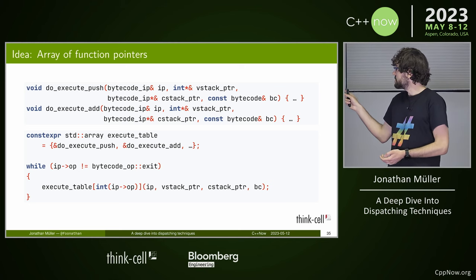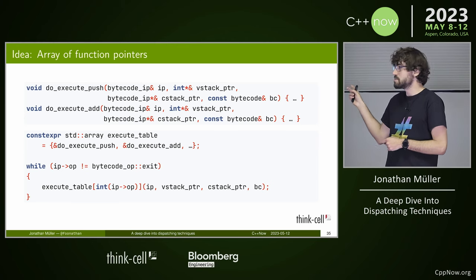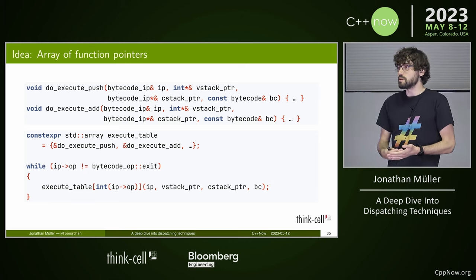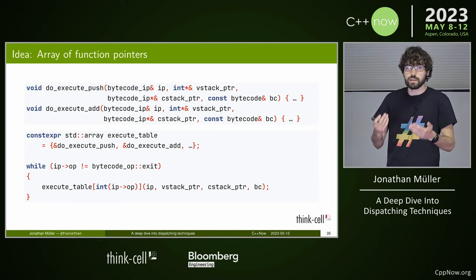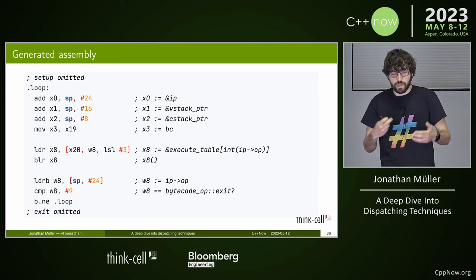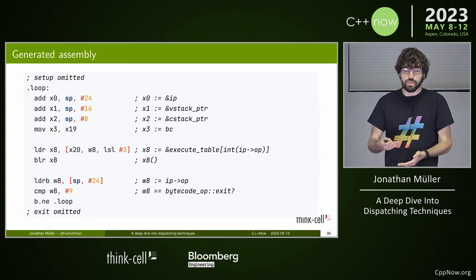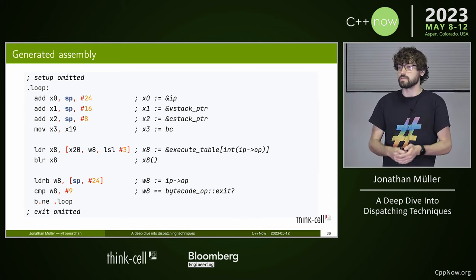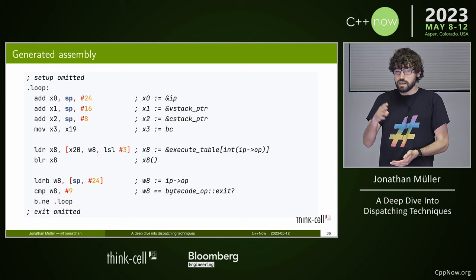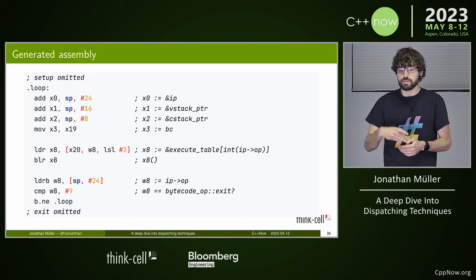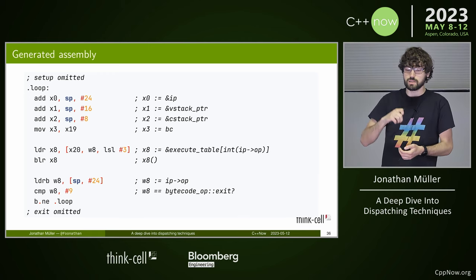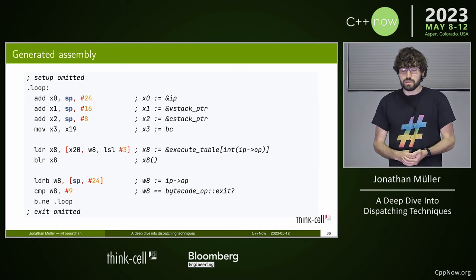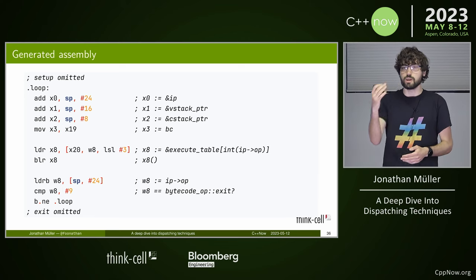Two things to note: first, we're not doing a range check when executing the lookup table, which is quite bad if we don't control the bytecode — but let's ignore that. Second, push modifies the VStack pointer, so we need to pass it by reference, and likewise the instruction pointer, to ensure modifications have effect. Looking at the generated assembly: we load references to the interpreter state, load the current opcode, index into the execute table to get the function address, call that function, then after it returns we load the next opcode and repeat.